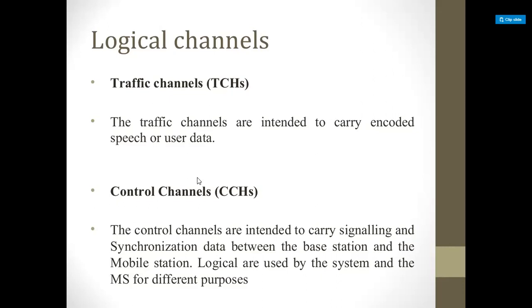When the transmitter has full rate, the user is mapped onto the same time slot but sent in alternate frames. The full rate TCH speech channel carries user data at a data rate of 13 kbps, and the full rate speech channel carries 22.8 kbps. Similarly, for 9600 bps, it carries digitized data at 22.8 kbps.